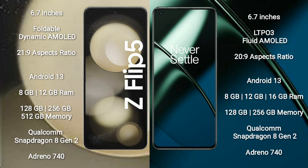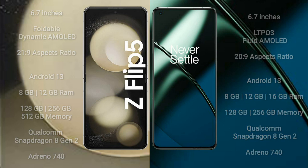OnePlus 11 comes with 8GB, 12GB, or 16GB RAM and 128GB, 256GB, or 512GB internal storage, Qualcomm Snapdragon 8 Gen 2 processor, and GPU Antino 740.